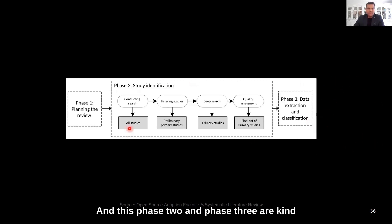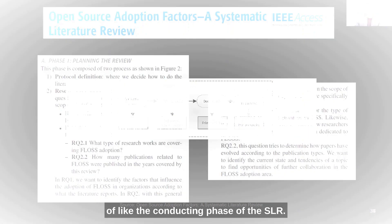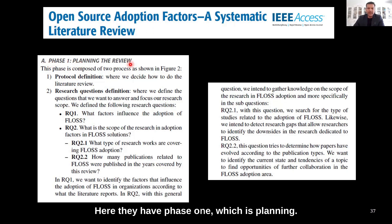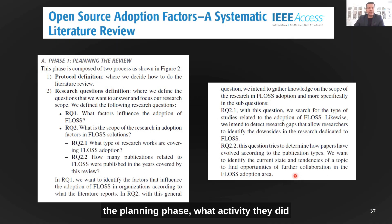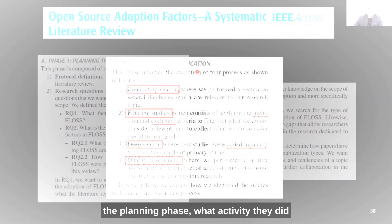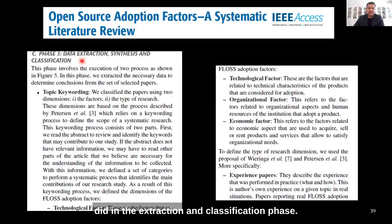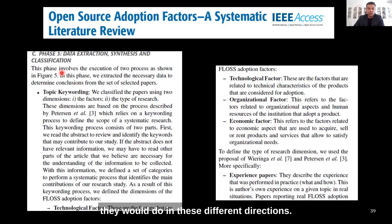Another paper - an IEEE Access systematic review on open source adoption factors - has phase one as planning, where they mention what activities they did; then the identification phase and what they did there; and finally the extraction and classification phase. This is an explanation of what they would do in these different phases.